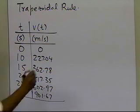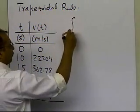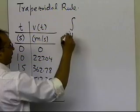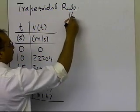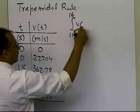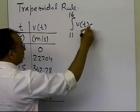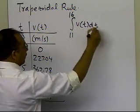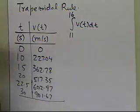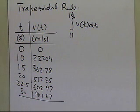So if somebody is telling you to go ahead and find out what the distance covered by this rocket is from 11 to 16 seconds, how do I go about doing that using the trapezoidal rule? That is the question which will be answered in this segment.